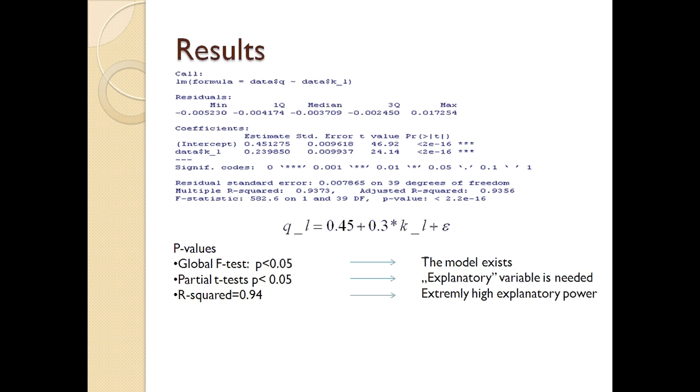We can see that both constant and labor-to-capital ratio have a p-value that is smaller than 0.05, so they are needed in the model. Please note that in this case, global F-test and partial t-test are equal because we only have one dependent and one explanatory variable.